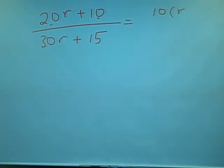And so, that would leave us with 2r plus what? Plus 1, right. Over, what can be a common factor in the denominator? 15, right. So, we can factor 15 out, and that leaves us also with 2r plus 1.